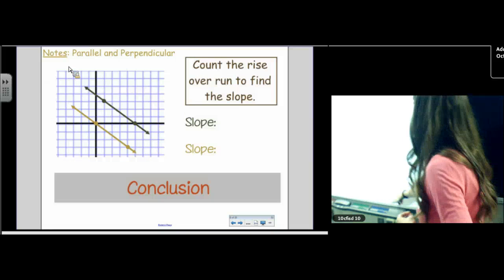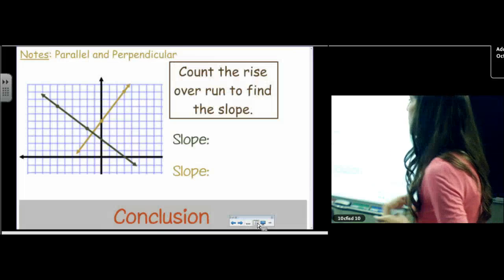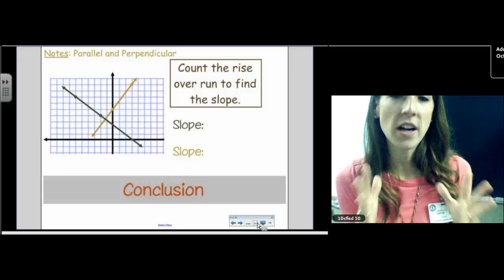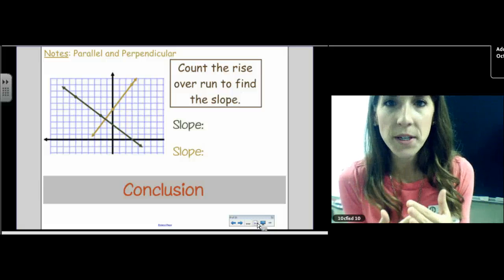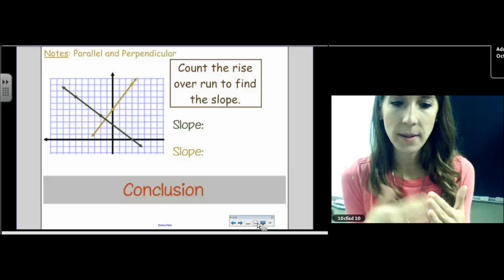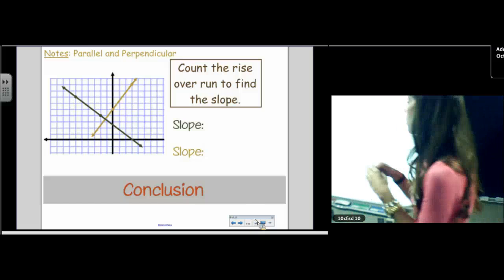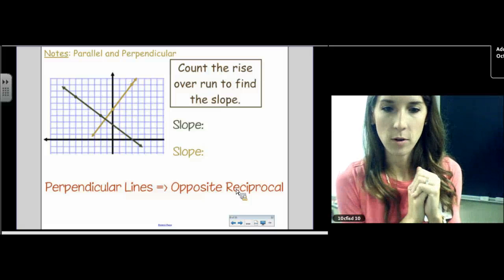So when two lines are perpendicular, aka they form a right angle, their slopes are opposite reciprocals. And that was actually what we were going to discover in the notes today. But you already discovered it through the homework. And so that's a wonderful lead into our lesson. We get to skip a few slides now.